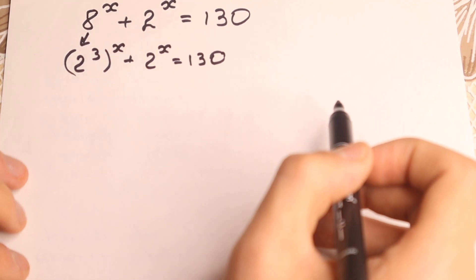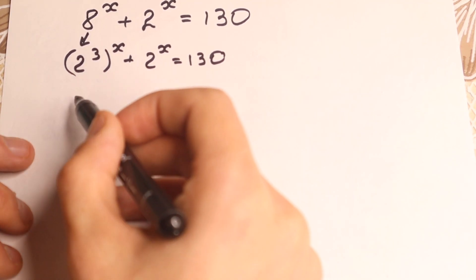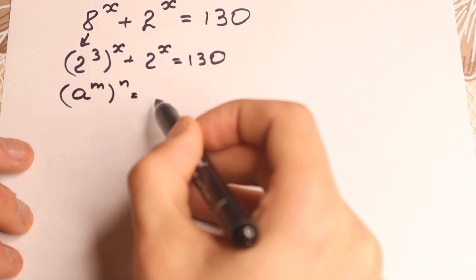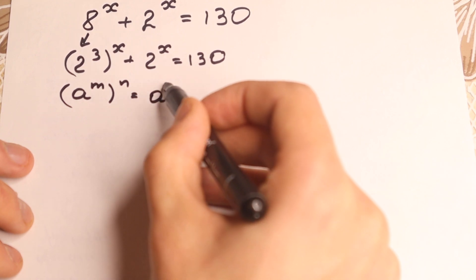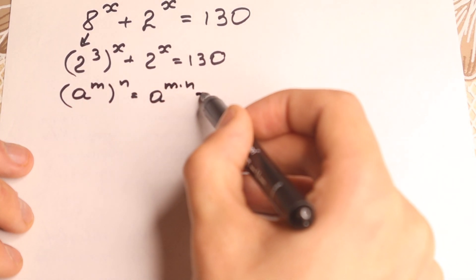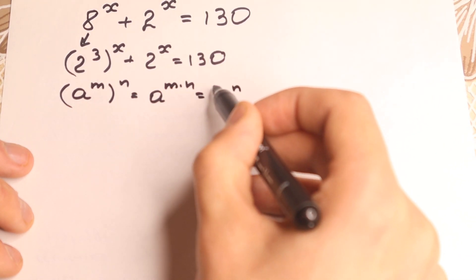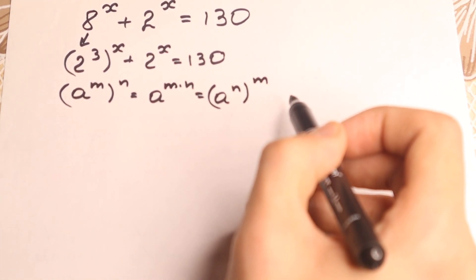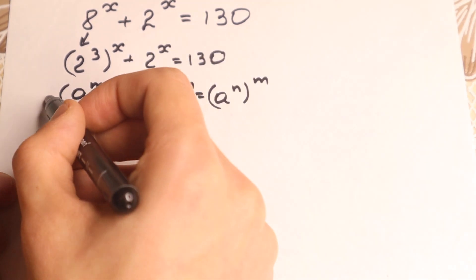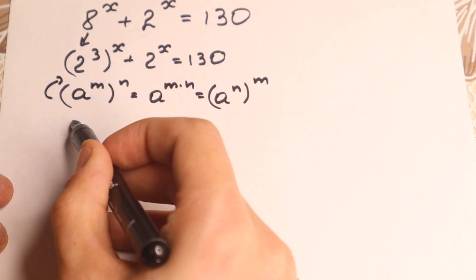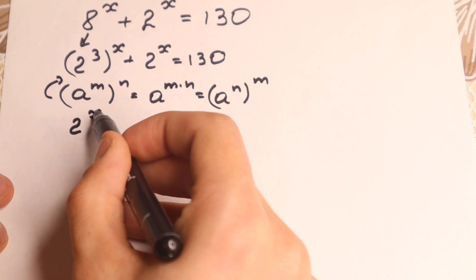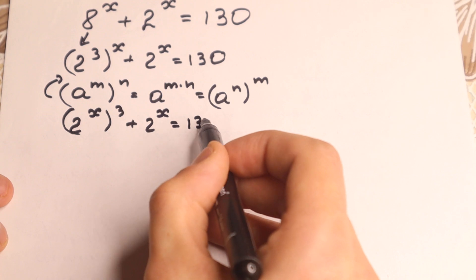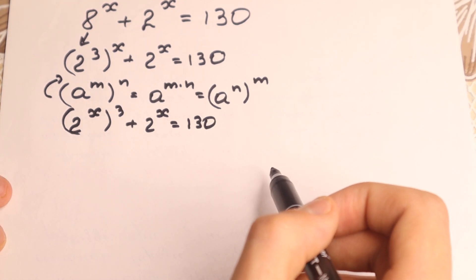What we're going to do next? We need to know a really interesting power rule: a to the power m raised to the power n can be written as a to the power m times n. So let's apply this rule and swap these powers. We'll have 2 to the power x raised to the power 3, plus 2 to the power x equal to 130.